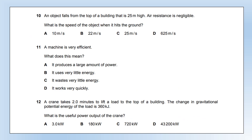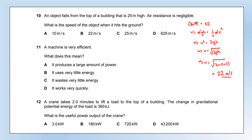An object falls from the top of a 25-metre building. Air resistance is negligible. What is the speed when it hits the ground? Because air resistance is negligible, GPE lost equals kinetic energy gained. Cancelling mass from both sides and rearranging to make speed the subject, then substituting, we get approximately 22 metres per second. The key idea is conservation of energy: GPE lost equals kinetic energy gained.